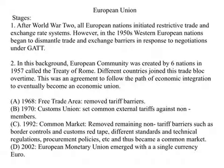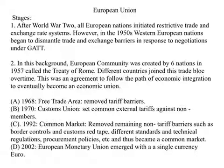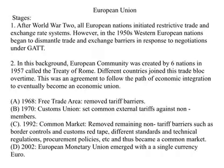Now let us briefly look at two successful examples of regional economic integration. The first is the European Union. After World War II, European nations realized they were very small individually. Comparing countries like France, Germany, and the UK to the size of the US, China, or India, they are very small. They decided to remove all economic restrictions among countries in Western Europe. The European Community was created initially by six nations in 1957 through the Treaty of Rome, and slowly different European countries joined this trade bloc.